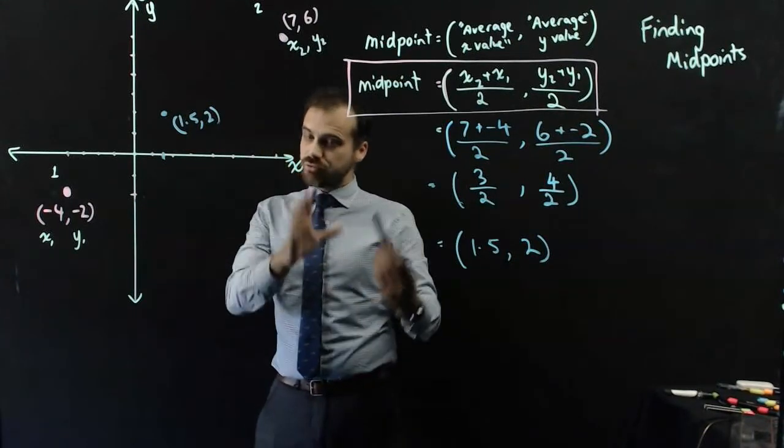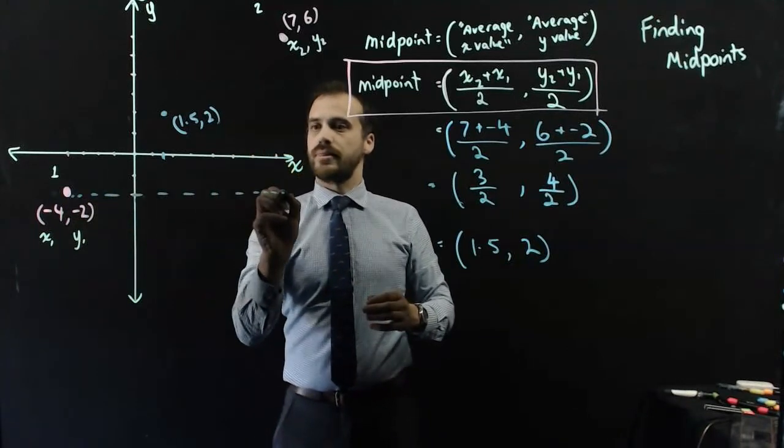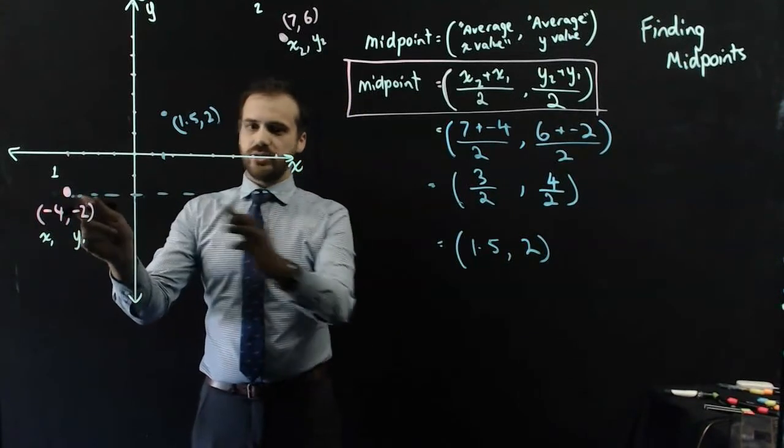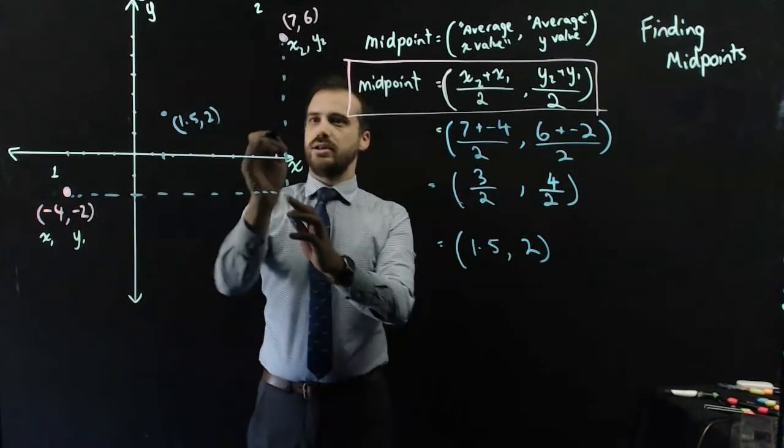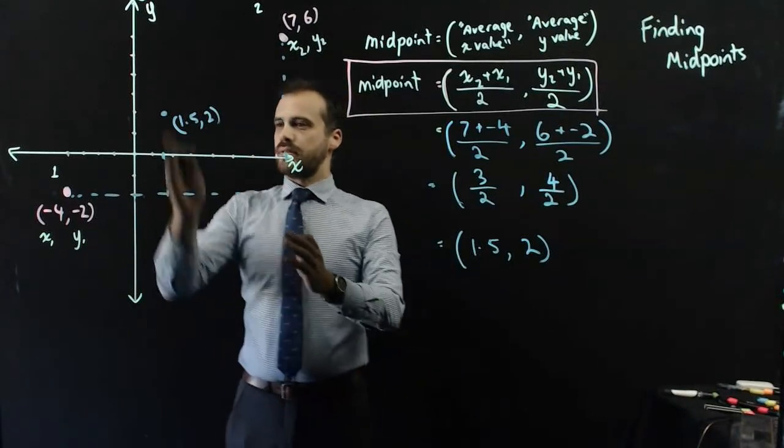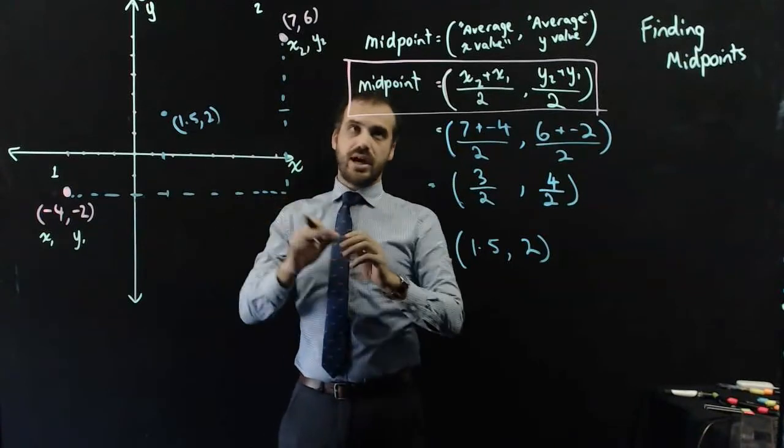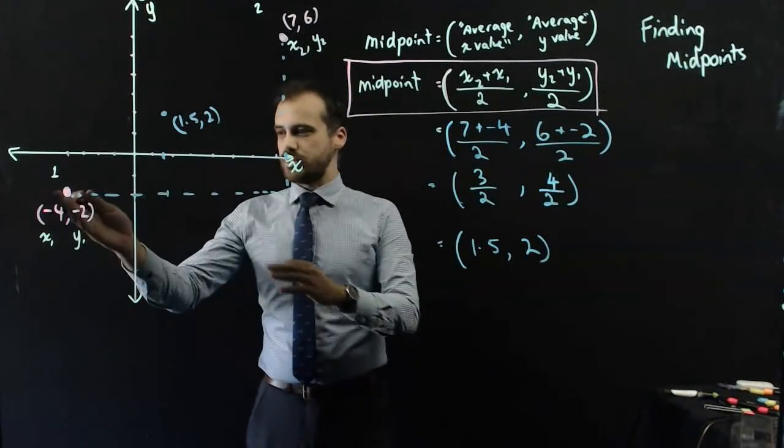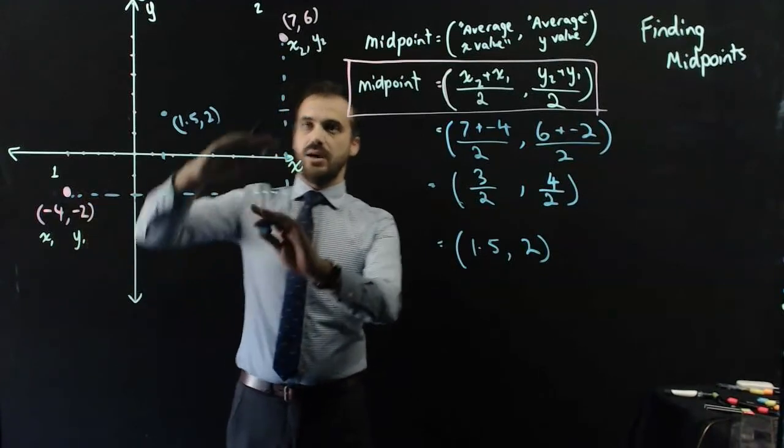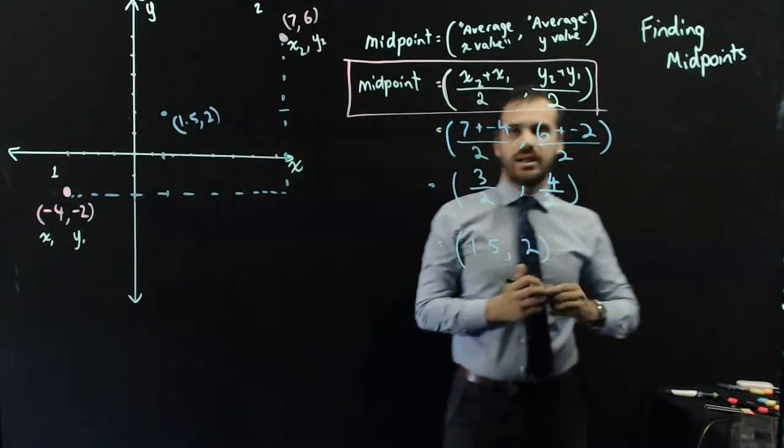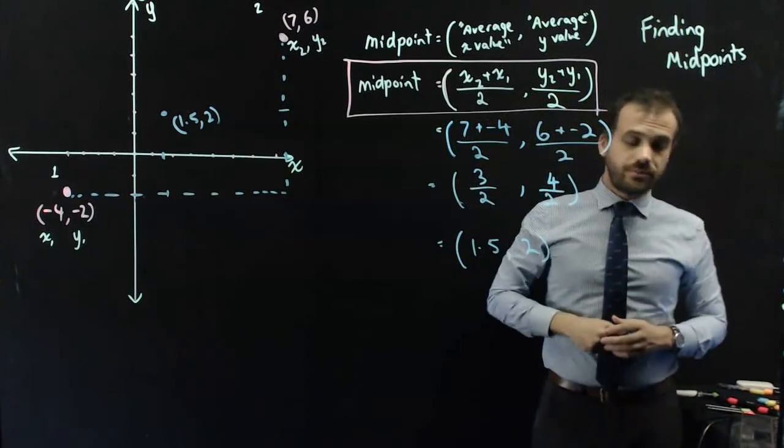Importantly, I just really want you to understand that what we're finding is halfway along this line, and halfway along that line. That's really what's happening in a question like this. We're finding halfway across, we're finding the average between this number and this number, we're finding the average between that number and that number. This is a very handy formula to have if you're going to find a midpoint.